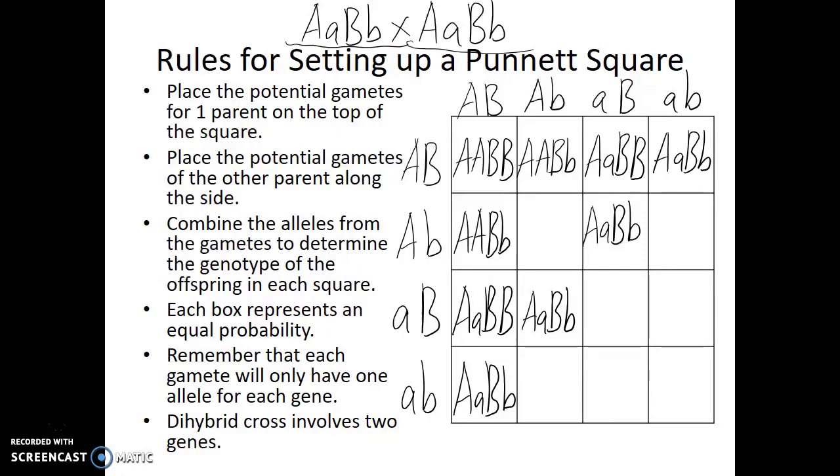The next box to fill in is going to be second row, second column. Big A, big A, little b, little b. Here's a case where we have an offspring who would be dominant for the first gene but recessive for the second gene. We'll see this in two more areas as well.